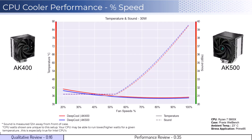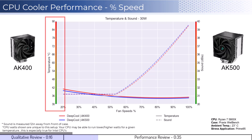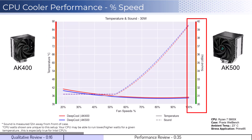Let's dig into the performance. We're going to cover two sets of graphs: one normalized by percent speeds and the second normalized by noise levels. Note that these graphs are created by using machine learning models to help break down the performance using over a million data points in an open case. This means that performance may differ depending on your case's airflow and your CPU. To orient you to the graph, the left side shows temperatures corresponding to the solid lines, with the right side showing noise levels represented by the dash lines.